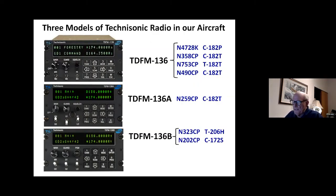We actually have three models of the Technasonic in our aircraft as they evolved over time, as we bought the aircraft from the old 28 kilo to the newer 182s and the 206 and the newest 172. The one on top, the plain old TDFM-136, which is its formal name, is the radio used in 182s: 28 kilo, 5-8, Charlie Papa, 5-3, 4-9-0. The A model, which is the one in the middle, is extremely similar. The operation is actually identical and it's in 259. And the newest model, the B model, is in the 206 and in the 172.